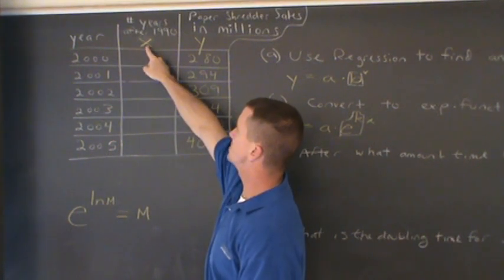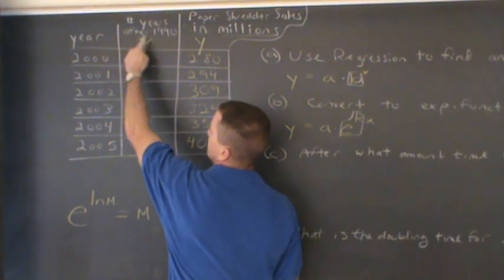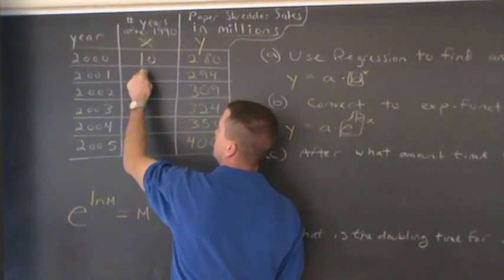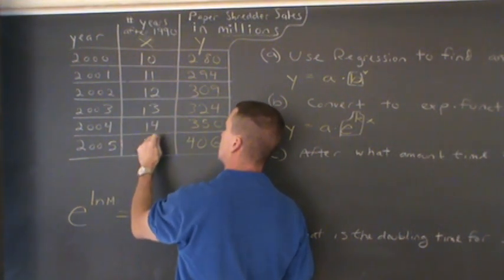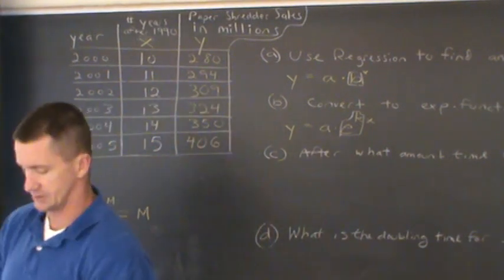What we're gonna do is we're gonna represent the variable x as the number of years after 1990. So of course, 2000 minus 1990 is 10 years, so we'll let x equal 10 here, so then 11, 12, 13, 14, and 15. So I'm gonna enter this in the calculator and show you how we can use regression to do this.